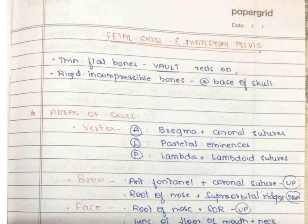Let's study about the chapter of fetal skull and maternal pelvis. First we'll deal with the fetal skull, then we'll deal with maternal pelvis. The fetal skull is made up of thin flat bones called the vault bones, and these rest on the rigid and incompressible bones of the base of the skull. The area of the skull can be divided into many parts.